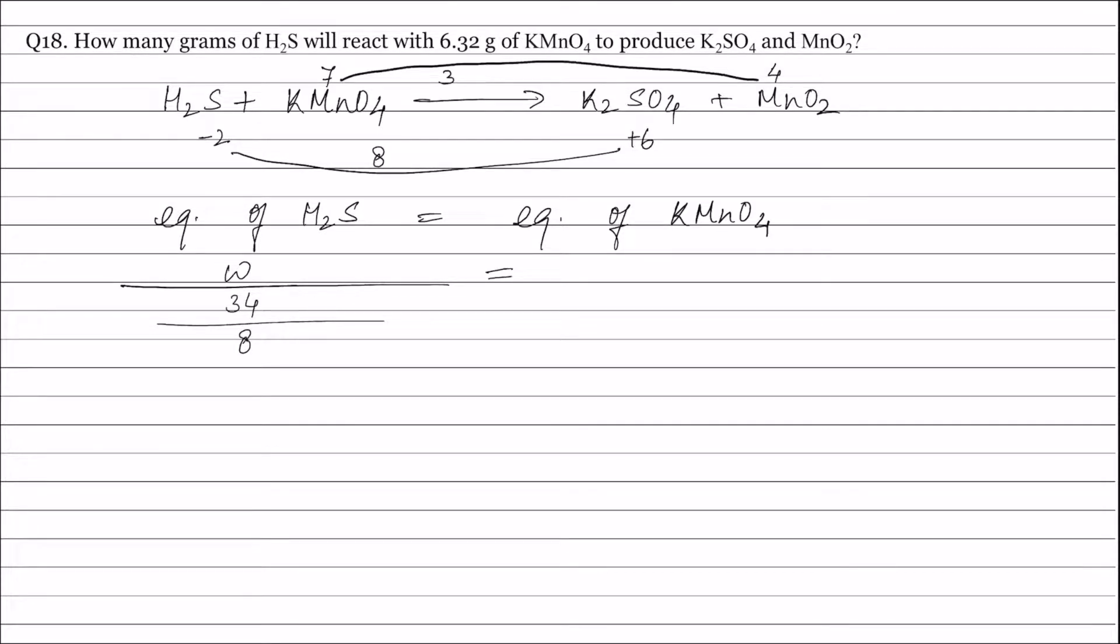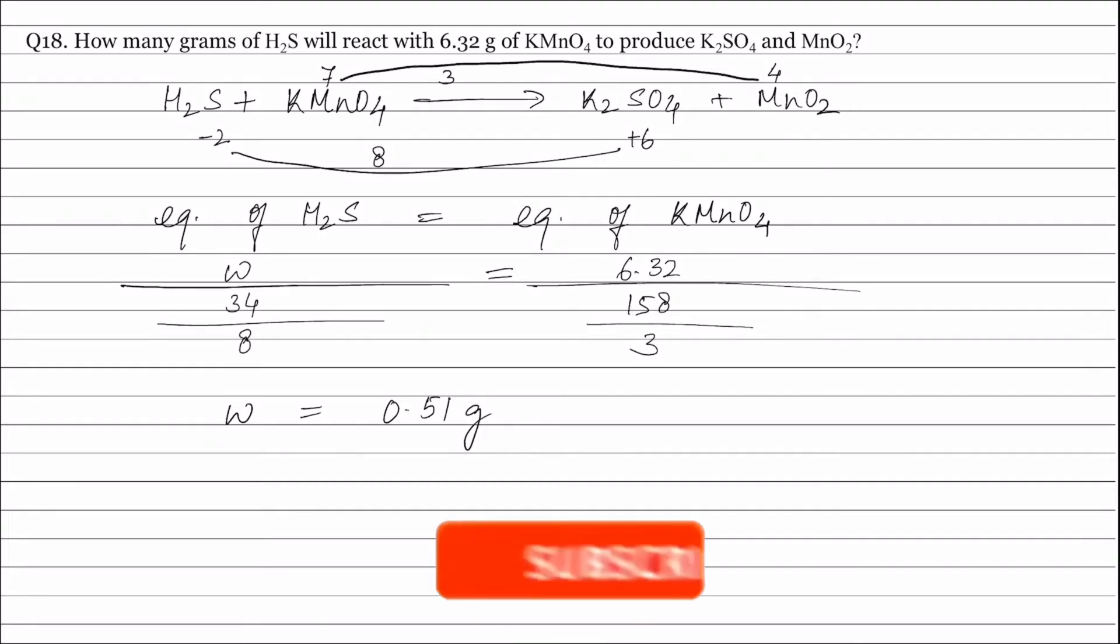Now equivalence of KMnO4 will be weight of KMnO4 that is 6.32 divided by molecular weight of KMnO4 that is 158 divided by valency factor that is 3. Solving this equation we get the value of W equals to 0.51 gram or the weight of H2S is equal to 0.51 gram.